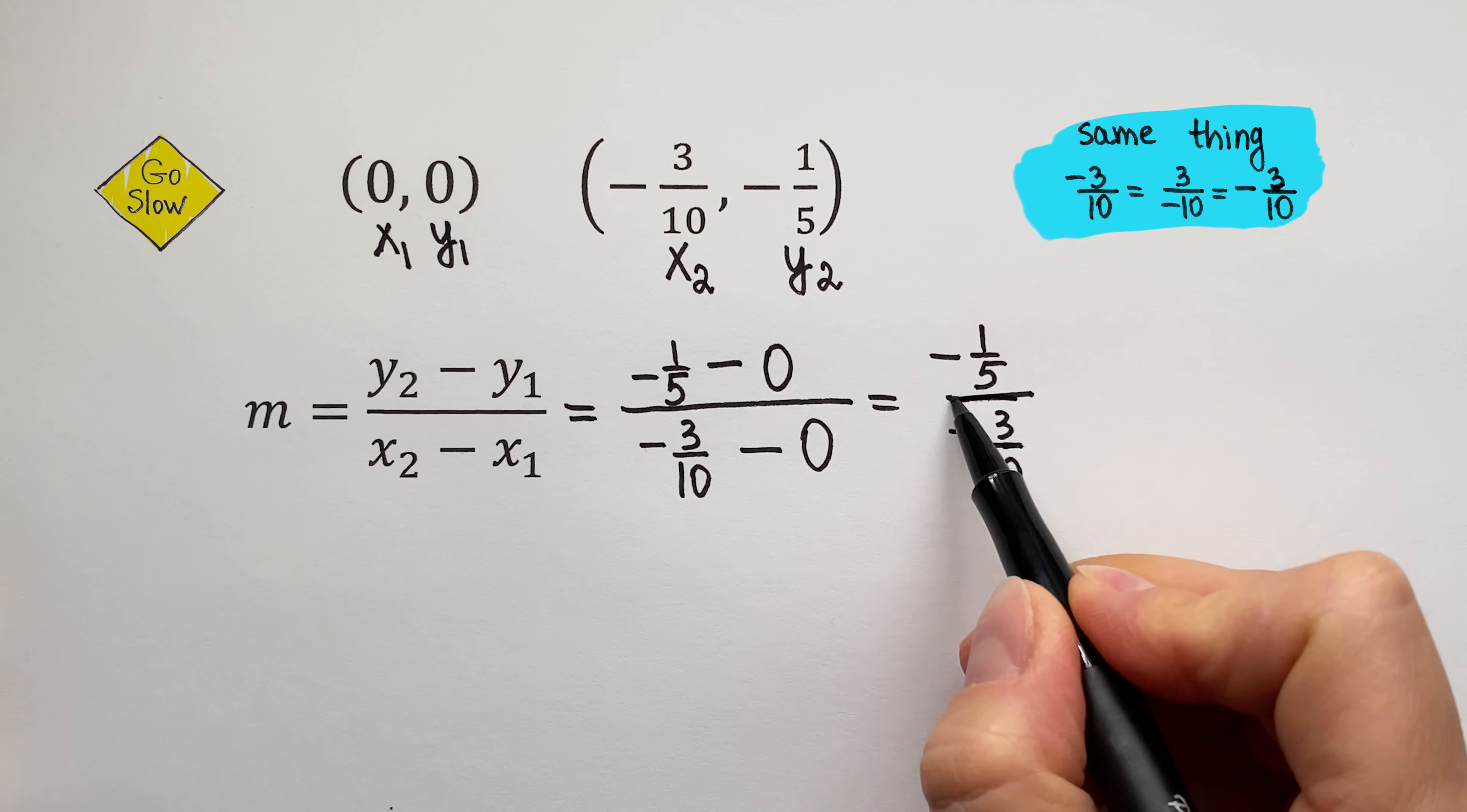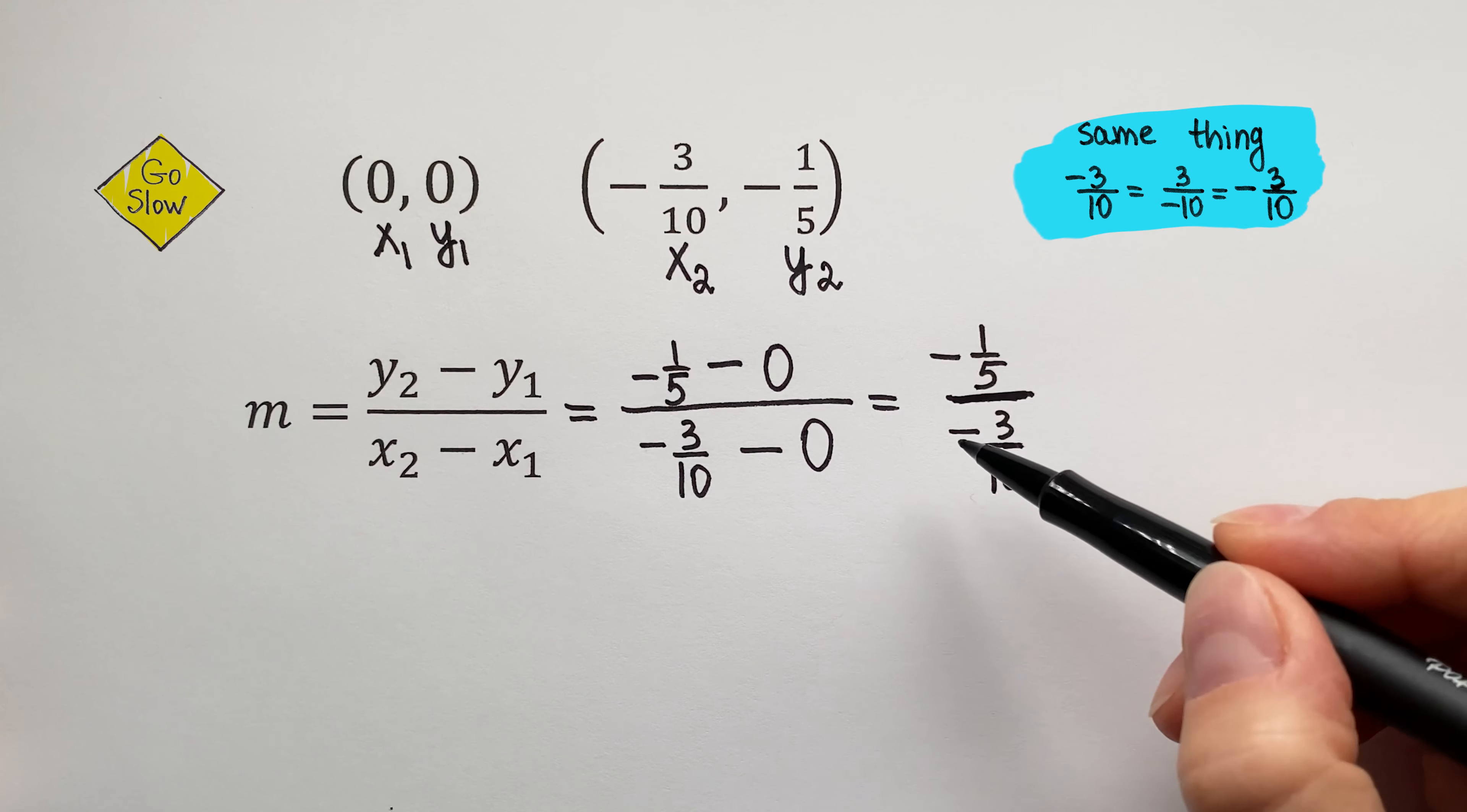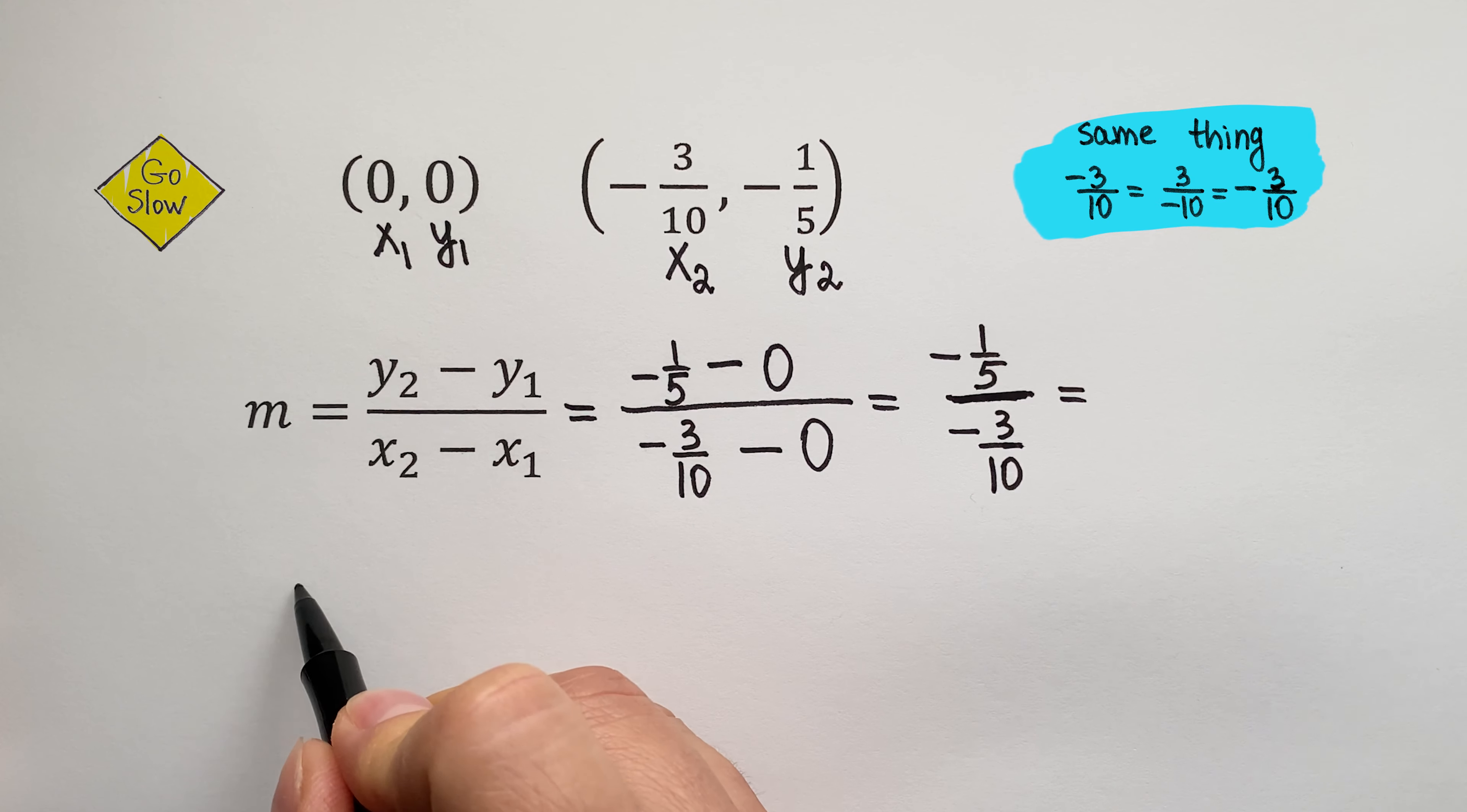What does this fraction bar mean? It means division. We are dividing one fraction by the other. Let's rewrite it so our eyes can see. Negative 1 fifth divided by negative 3 tenths.